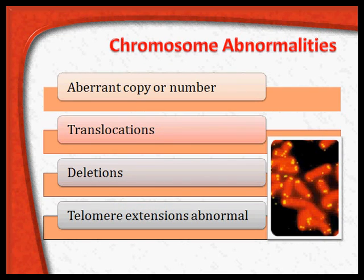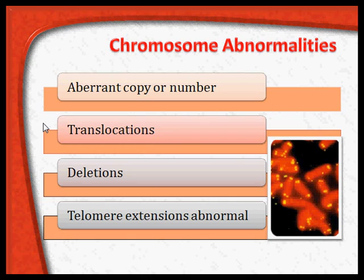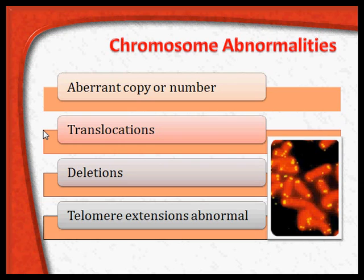Chromosome abnormalities: tumors can result due to abnormalities in the chromosomes. There could be aberrant copy number, translocations of one part of the chromosome into another chromosome of the same cell, or part of the chromosome may be deleted — called deletions. The best example of translocation is the Philadelphia chromosome in chronic myeloid leukemia, which we will see a little later.